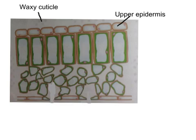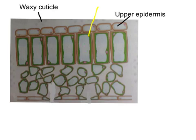Underneath the upper epidermis we find larger cells that extend down through the leaf. They are specialised because light coming through the leaf needs to be absorbed by chloroplasts for photosynthesis. Because these cells are stretched out, light has a larger distance to travel through them, increasing the chances of hitting the chloroplasts. They have quite a lot of chloroplasts and are called the palisade mesophyll, or palisade cells.